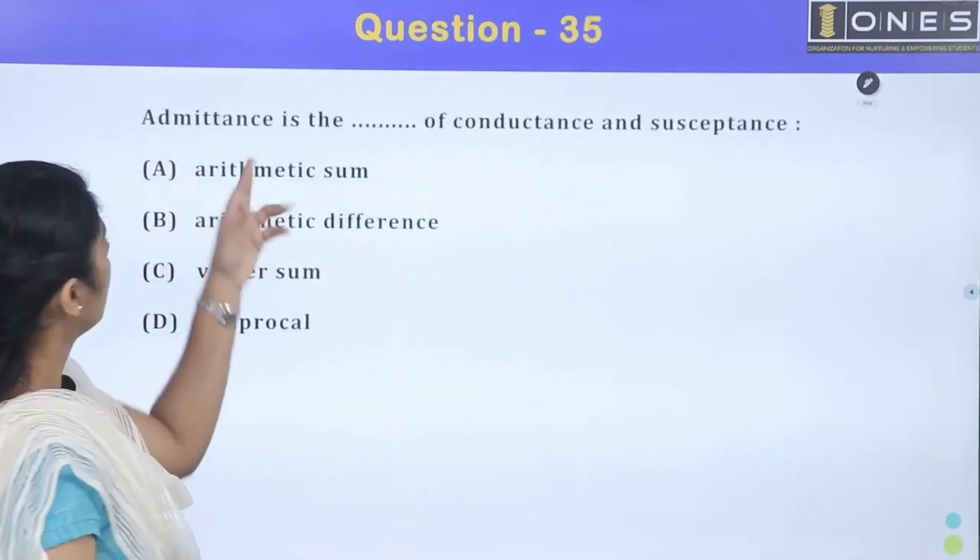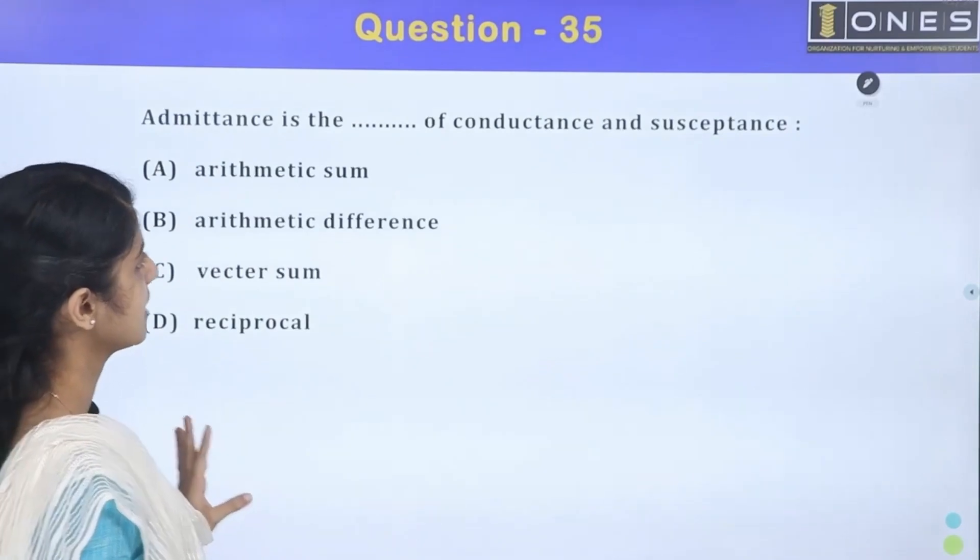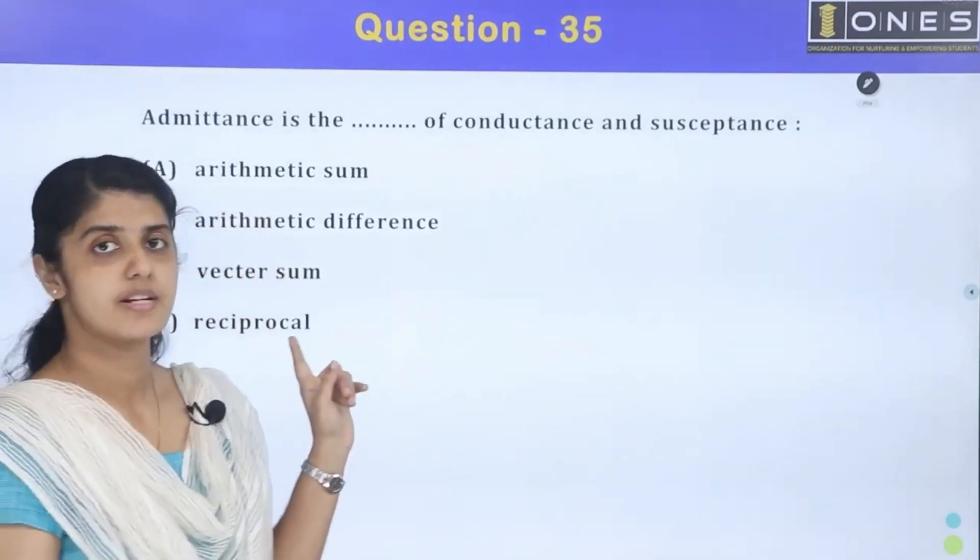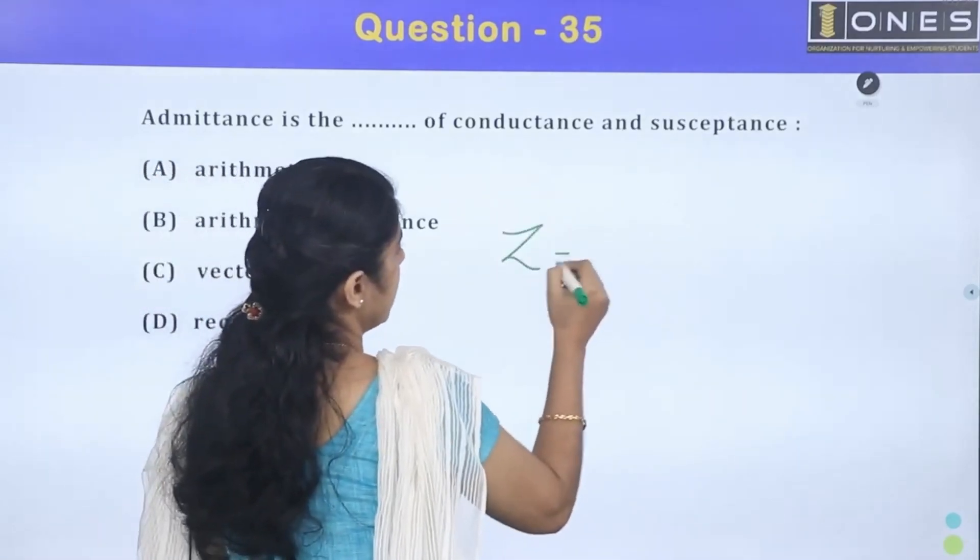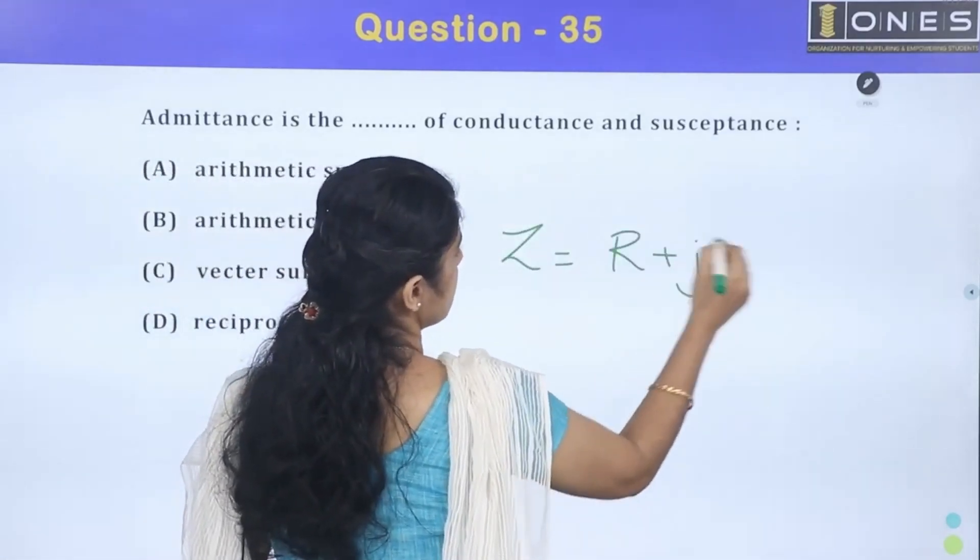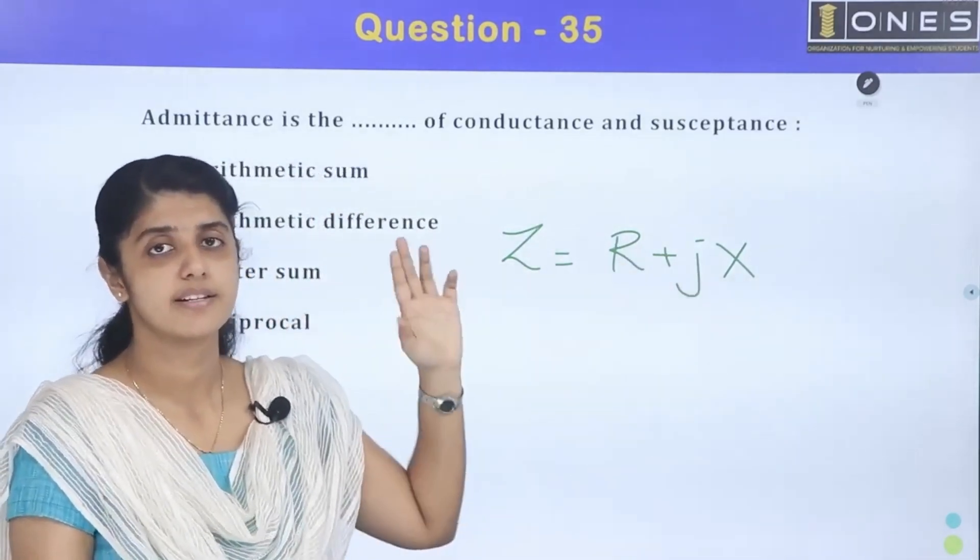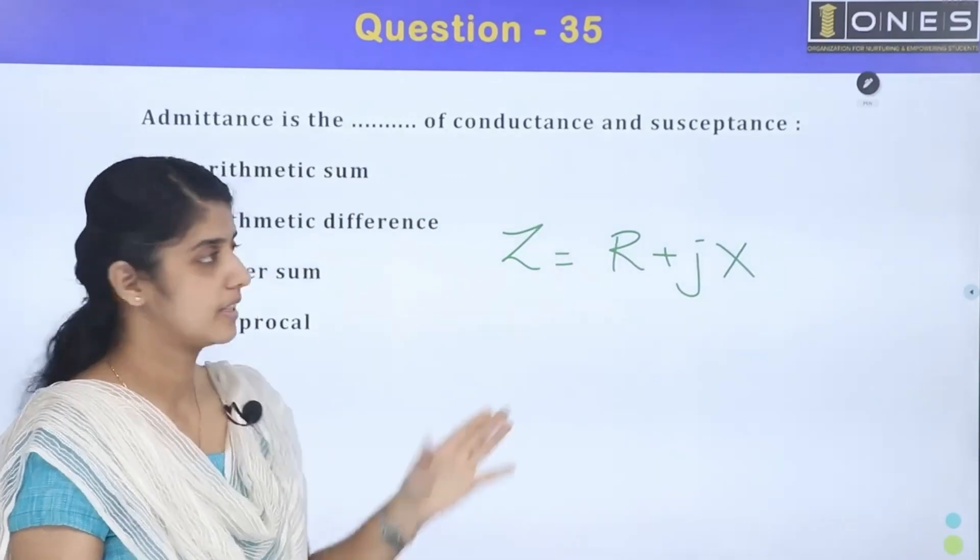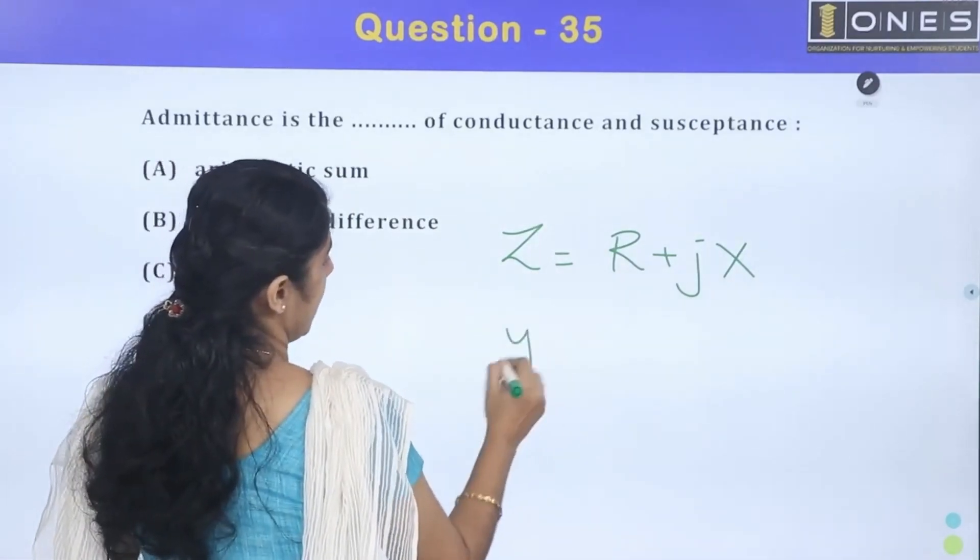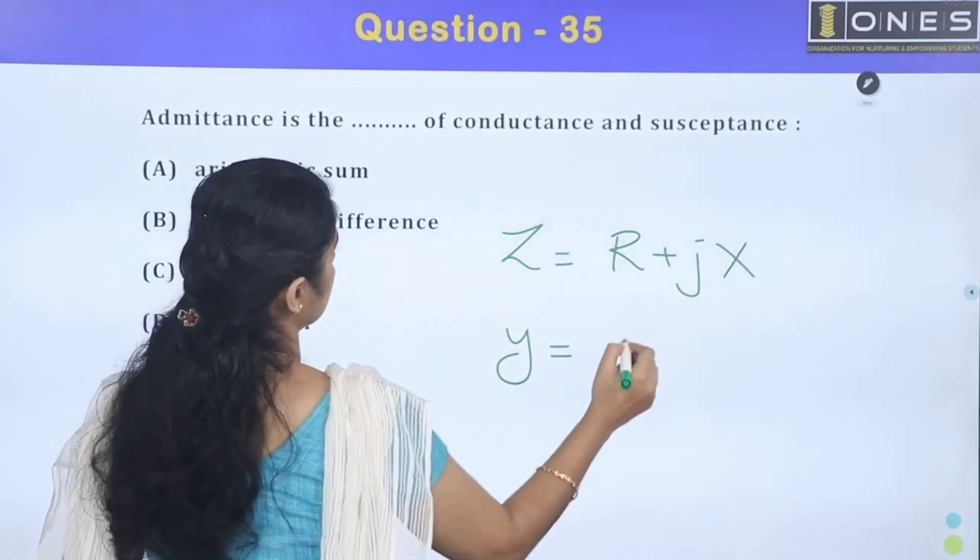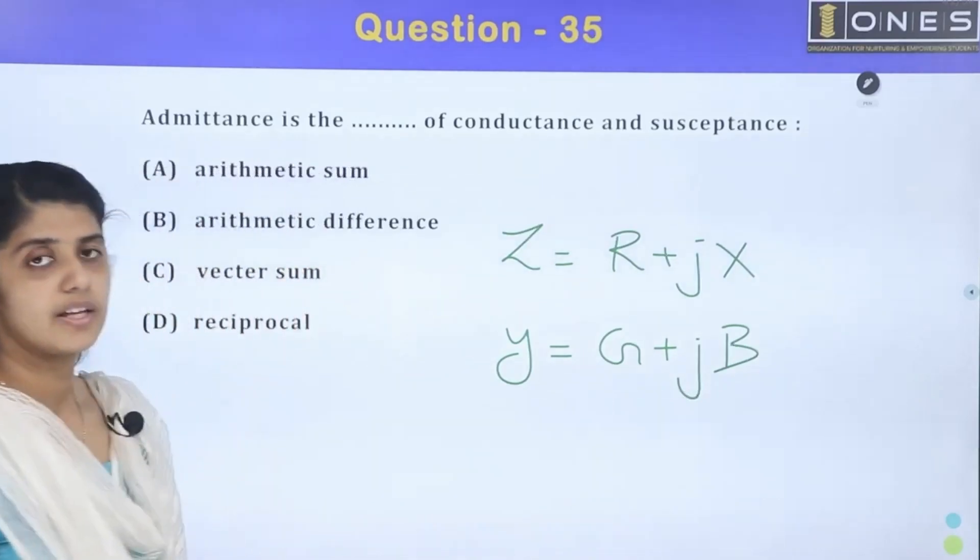Then, admittance is the dash of conductance and susceptance. Note what I am going to say. Admittance... I am going to say impedance is equal to resistance plus reactance. Admittance is the sum of conductance and susceptance. Conductance and susceptance.